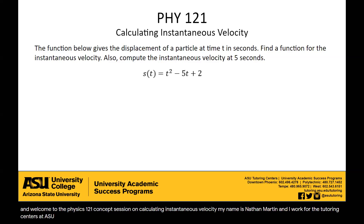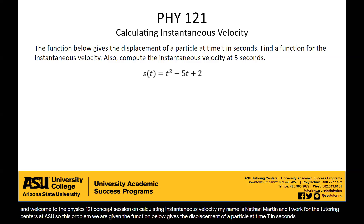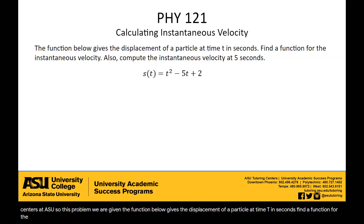So this problem: we're given the function below gives the displacement of a particle at time t in seconds. Find a function for the instantaneous velocity. Also, compute the instantaneous velocity at five seconds.